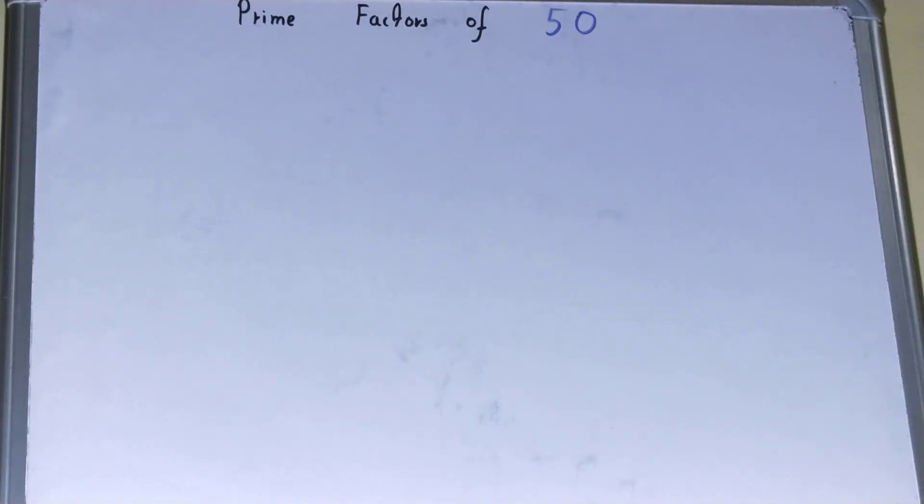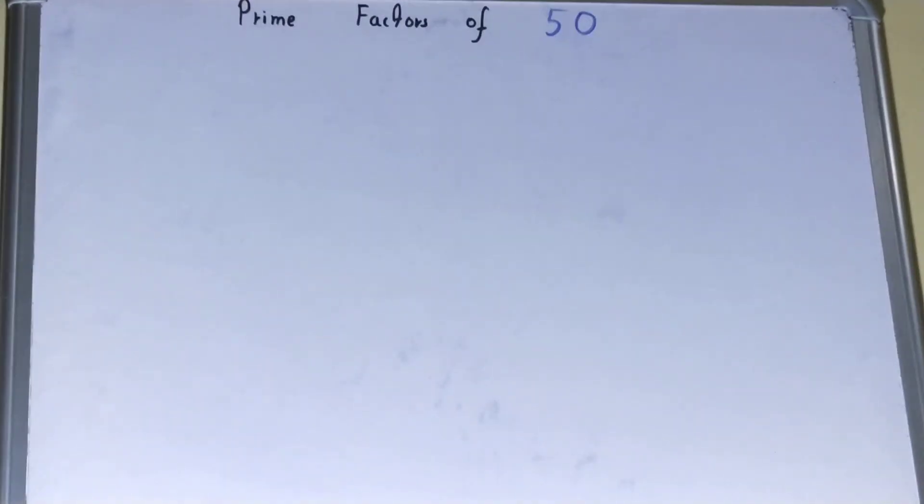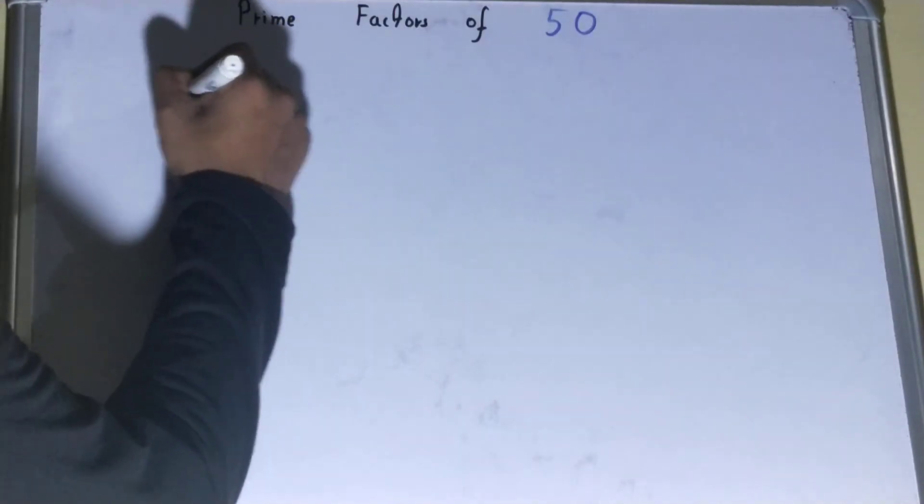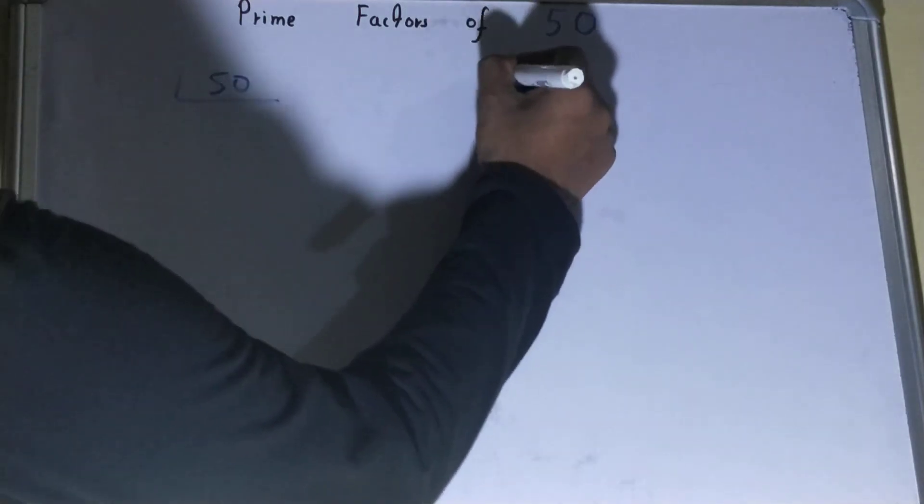Hello friends, in this video I'll be helping with the prime factors of the number 50. So to find the prime factors of 50, before solving this you should know what prime numbers are. Prime numbers are numbers which are divisible by themselves and one only, like 2, 3, 5, 7, and so on.